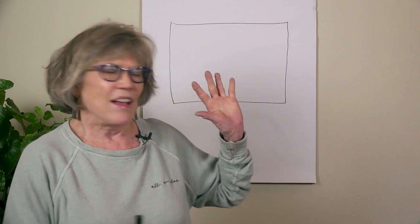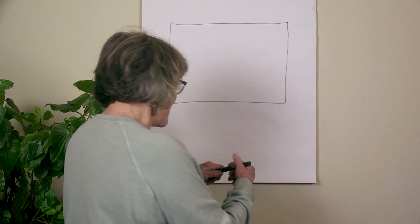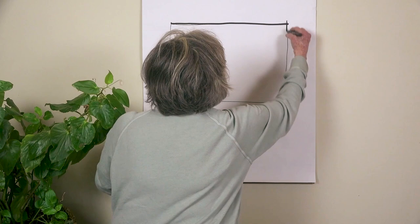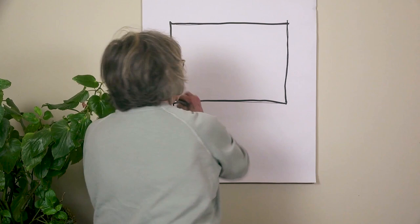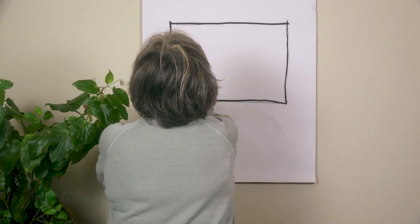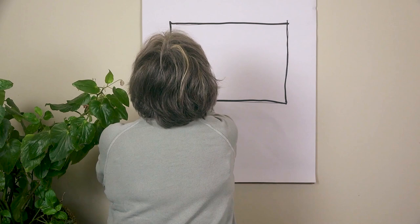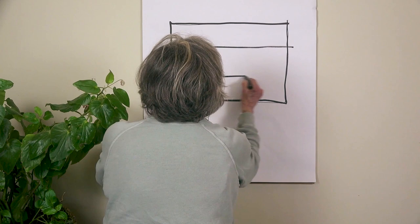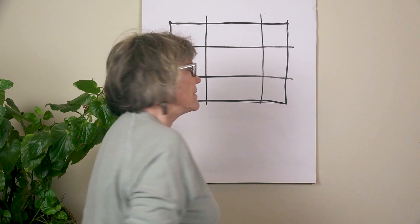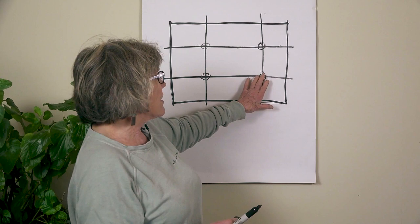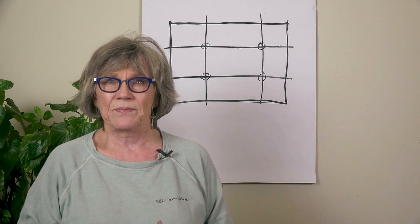There is something else with design that some people don't know about, and that's the psychological effect of certain areas. I've drawn this out for you — this is the outside of your painting. One of the design principles, one of the design composition rules, is the rule of thirds. These intersection points are very desirable places to put your center of interest in your composition.